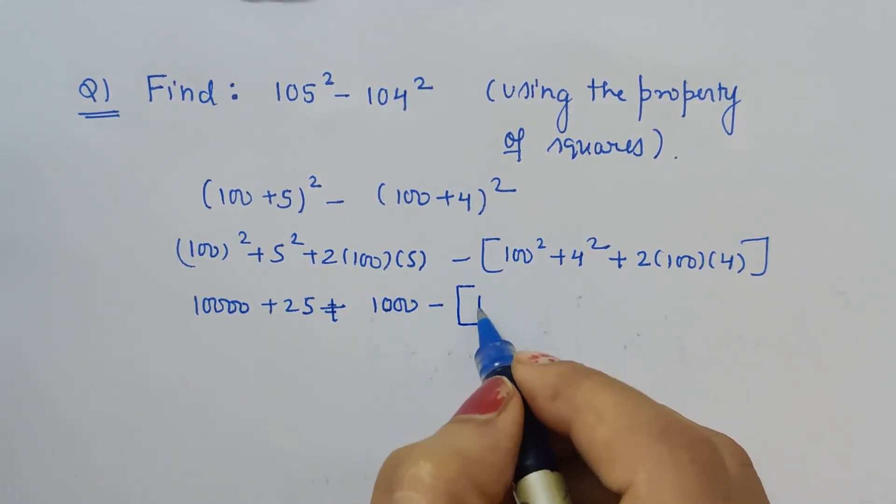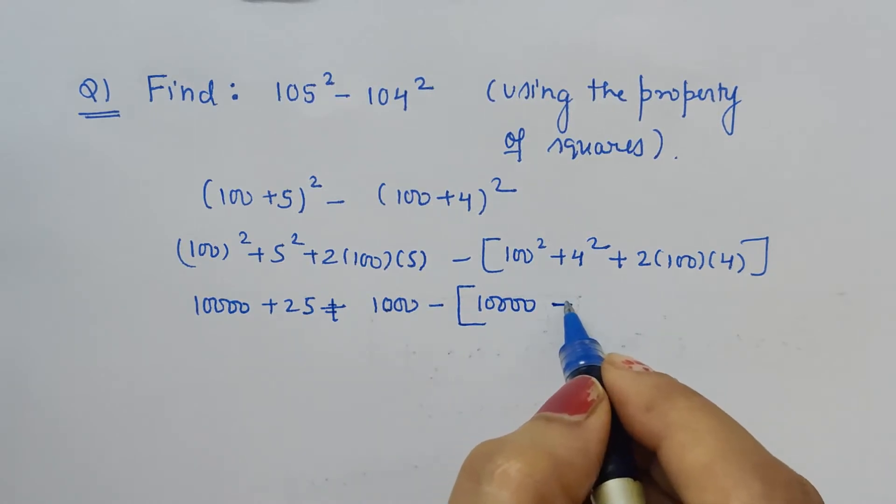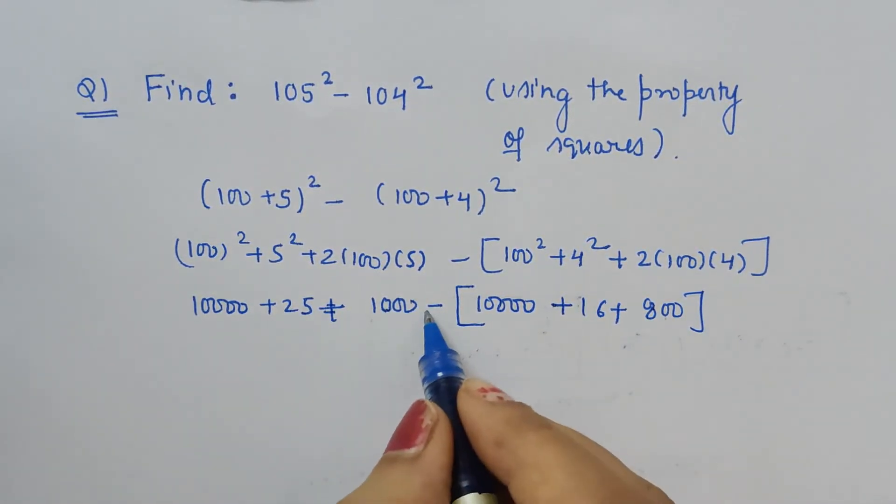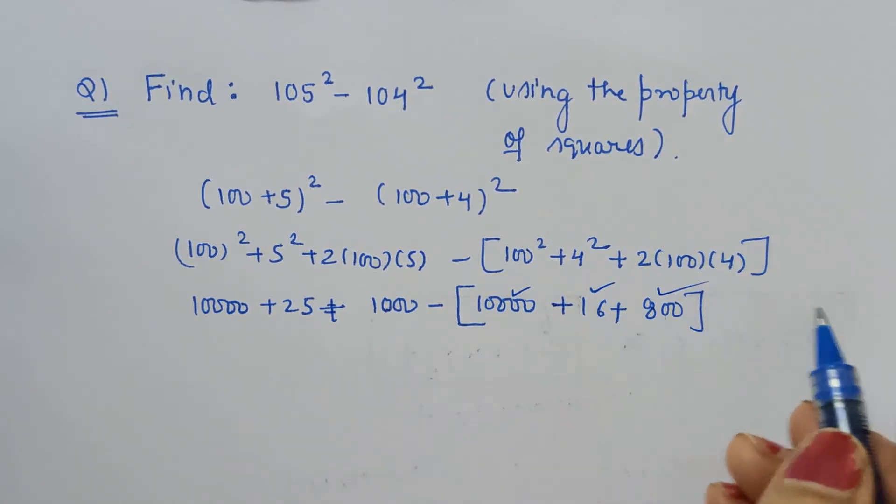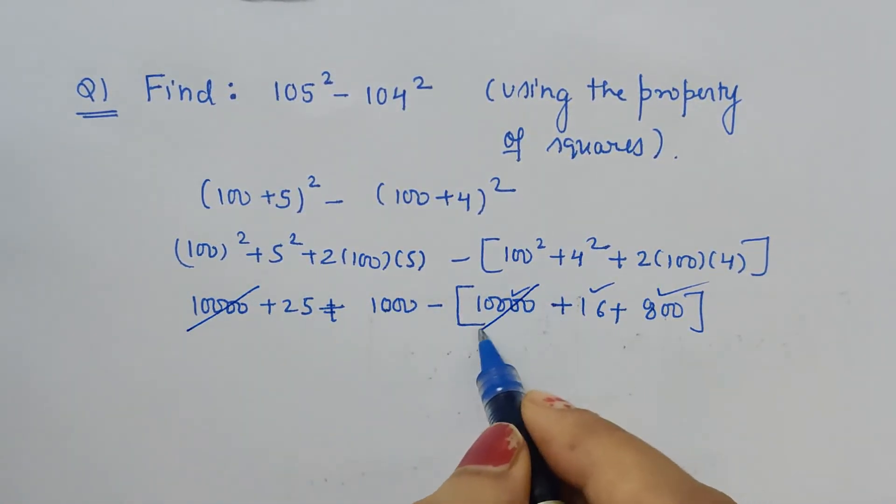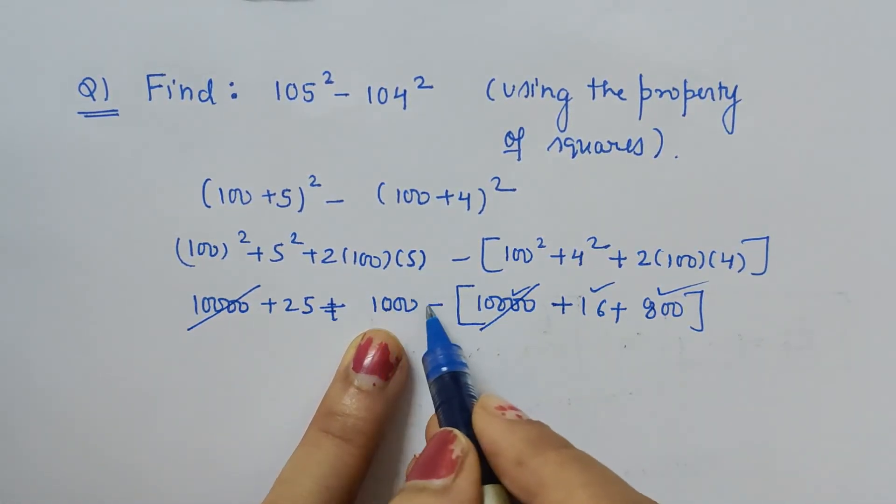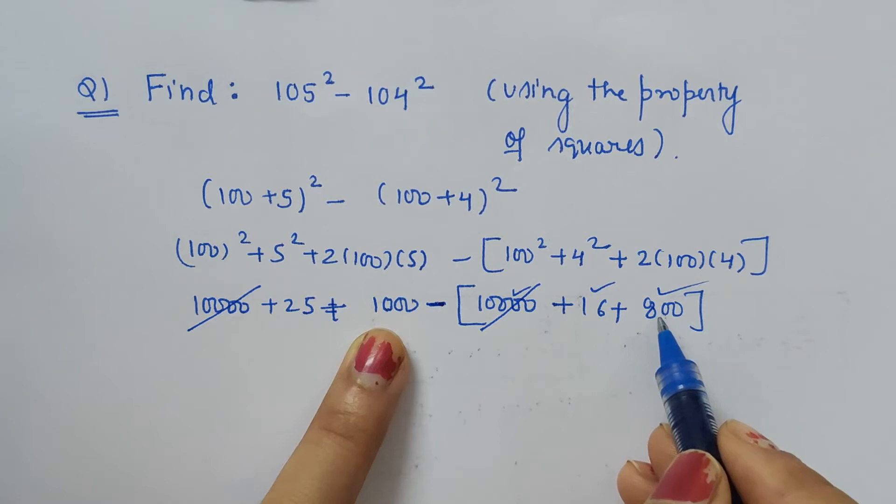The minus sign applies to all three terms, so the 10000s cancel because they are equal numbers with opposite signs. Then 1000 minus 800 equals 200.